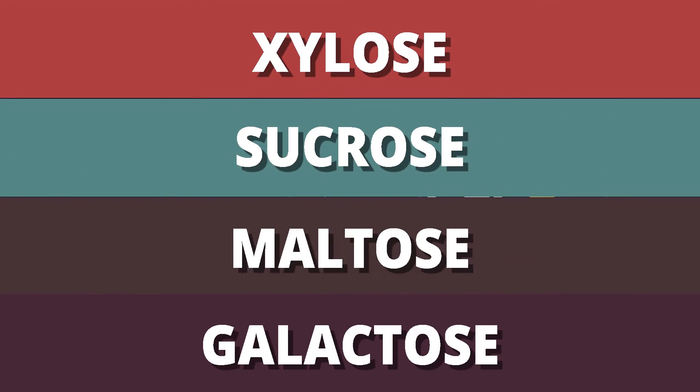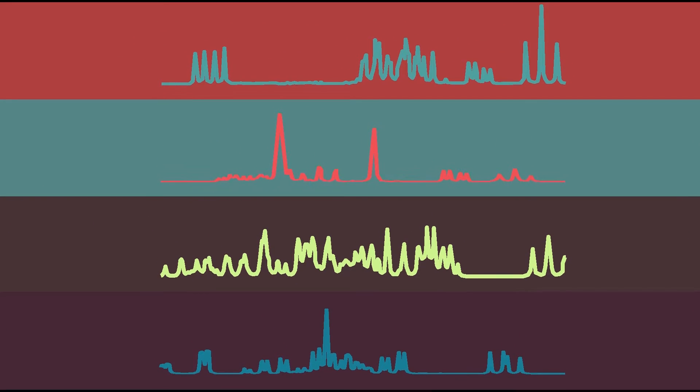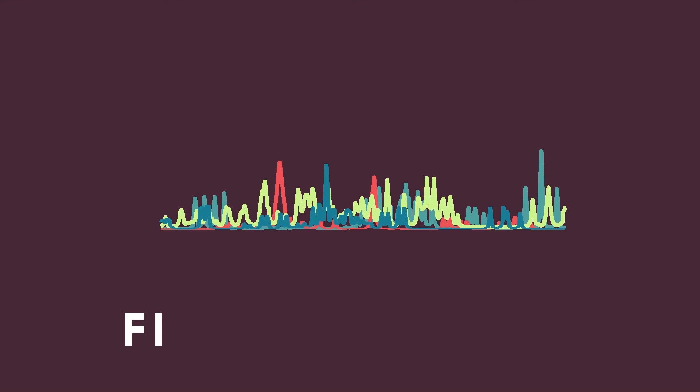Each molecule behaves differently in the NMR, and through this, honey can be analyzed for adulterants. It's like getting the fingerprint of honey and comparing it to a database of fingerprints.